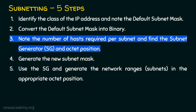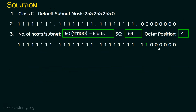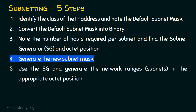Now we generate the new subnet mask for the largest network, the 60-users network. The new subnet mask is 255.255.255.192 — that is 128 plus 64. In slash notation, it is 8+8+8+2 = /26. Note this subnet mask applies only to the 60-users network. Step 4 is complete.